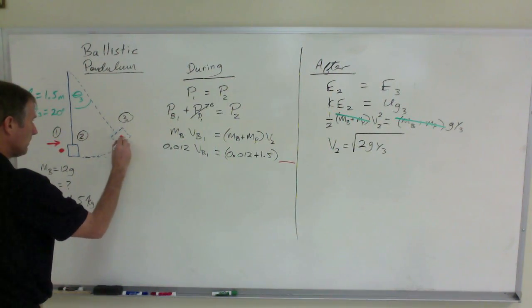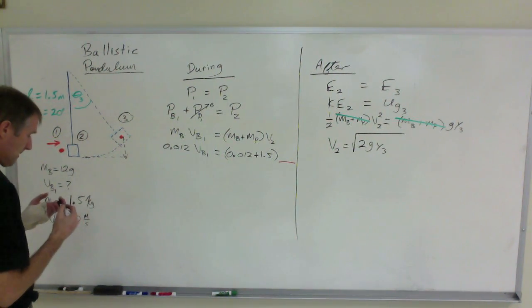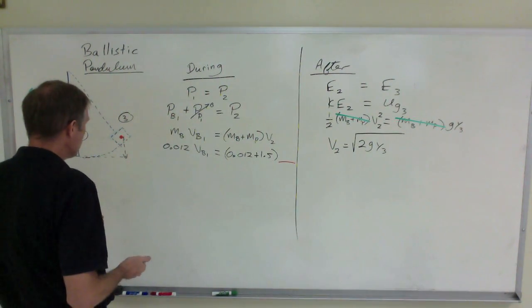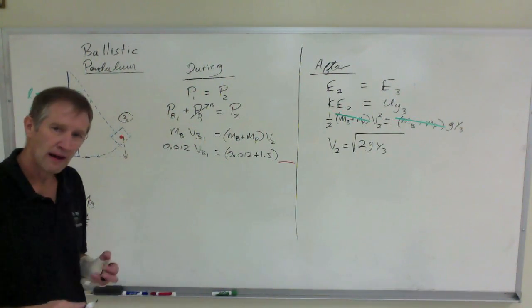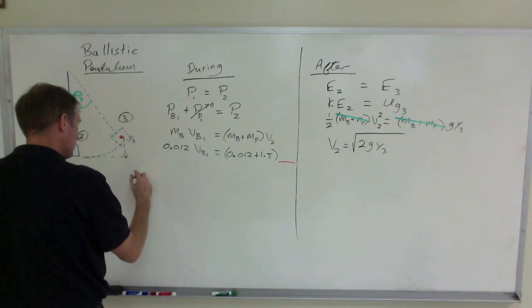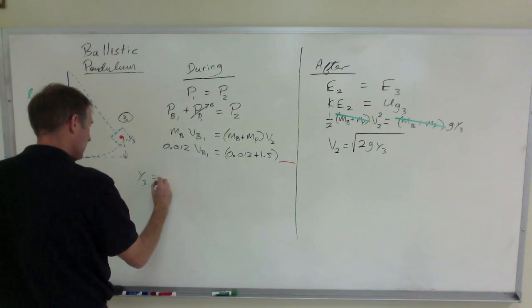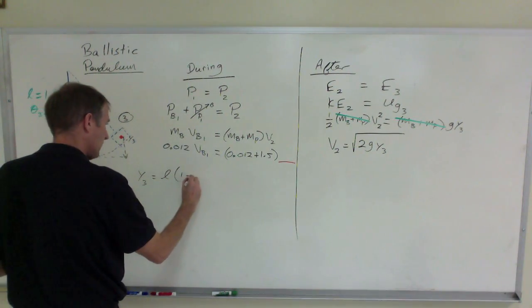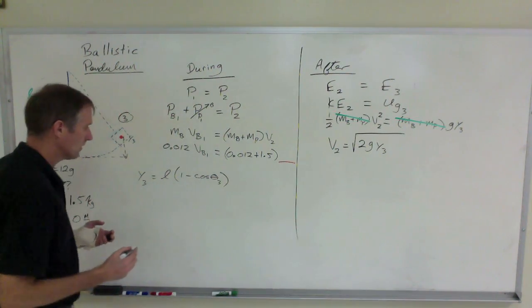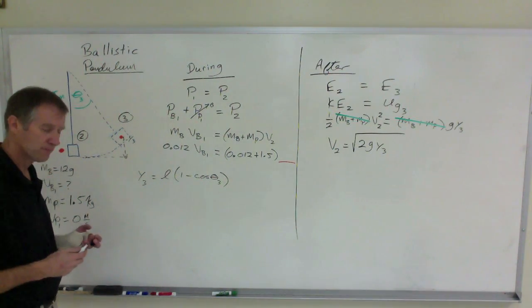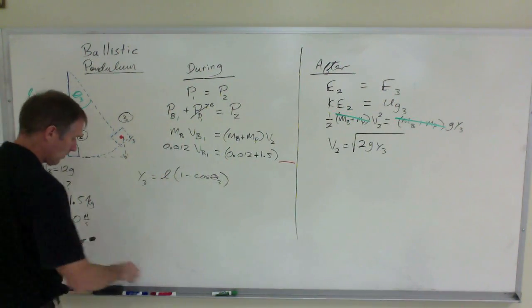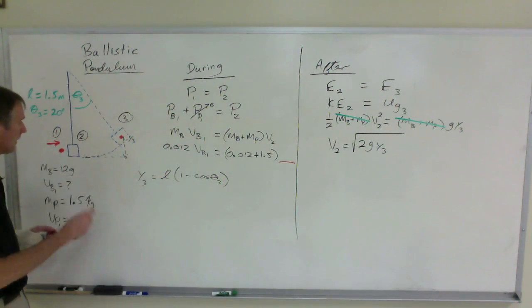It's this height right here. There's a proof that I'll do in class that will show this. When you calculate that Y3 becomes L times one minus the cosine of the maximum angle. Then you should know how to come up with that. That was by turning this, by the way, that came from turning this into a right triangle.